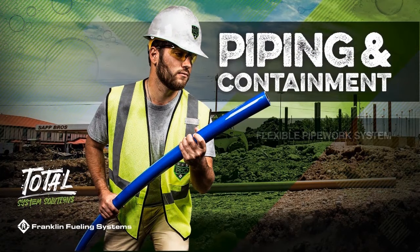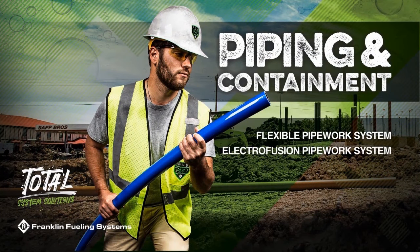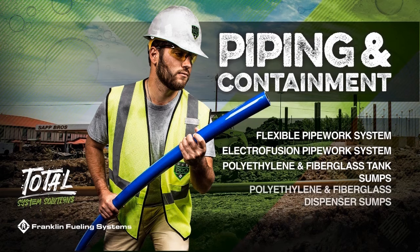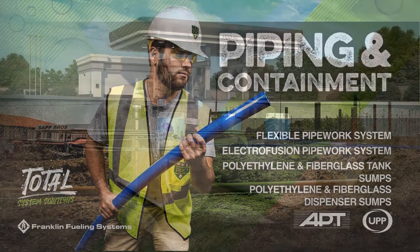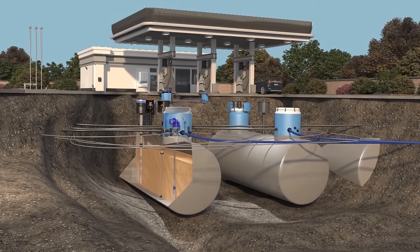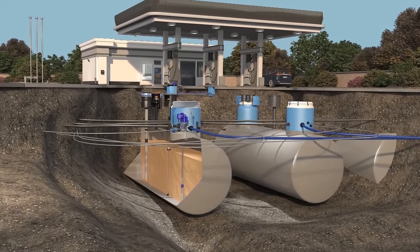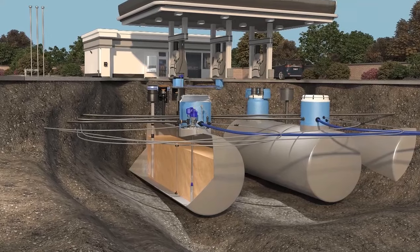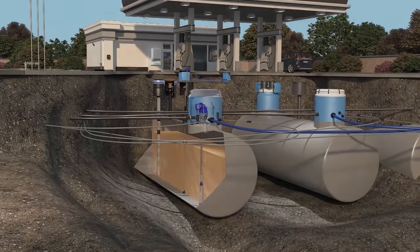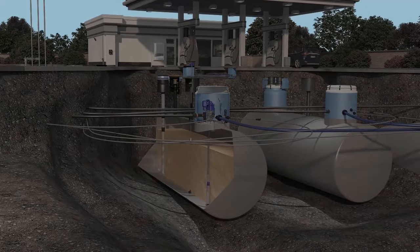At Franklin Fueling Systems, we have six main product lines that make up our complete site package. Let's begin with piping and containment first. The main products we will cover in this category include our flexible and semi-rigid pipework, sumps, and our innovative watertight connection technologies that help move fuel safely from the tank to the dispenser.